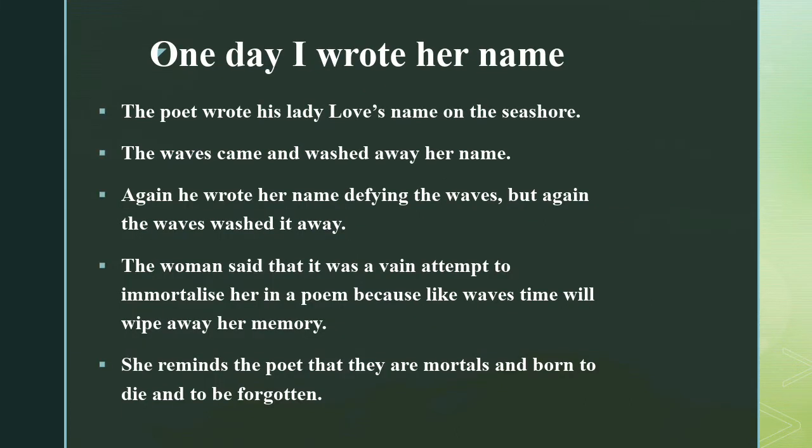The poet wrote his lady love's name on the seashore. The waves came and washed her name away. Again he wrote her name, defying the waves, but again the waves washed it away. The woman said that it was a vain attempt to immortalize her, because like the waves, time will wipe away her memory. She reminded the poet that they are mortals, born to die and to be forgotten.